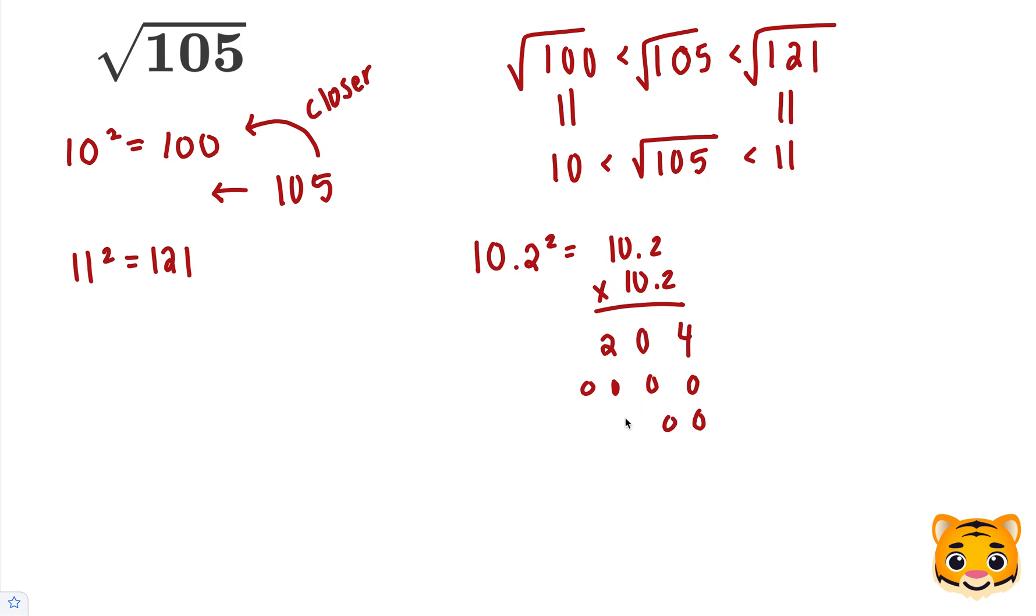Multiply by 1: 1 times 2 is 2, 1 times 0 is 0, and then 1 times 1 is 1. When we add these together, we get 104.04, which is very close to 105.